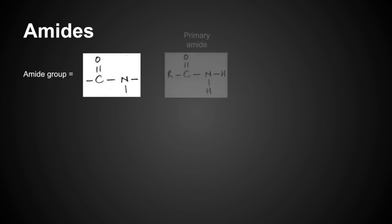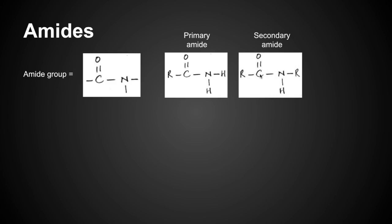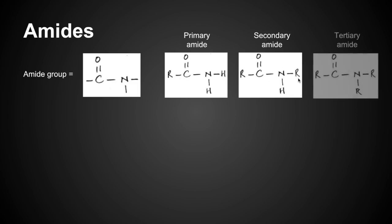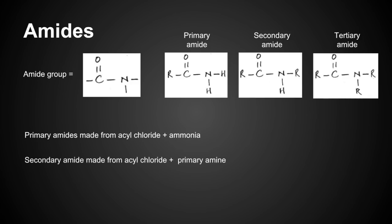Moving on to amides. The amide group looks like that. We can get primary amides, which we saw a couple of slides ago. The nitrogen is bonded to one carbon directly. Secondary amide, there's one carbon, but there's another one here in this R group. Tertiary, the nitrogen's bonded to one, two, three carbons. Primary amides are made from an acyl chloride and ammonia. Secondary acyl chloride with primary amine, and tertiary acyl chloride plus secondary amine.